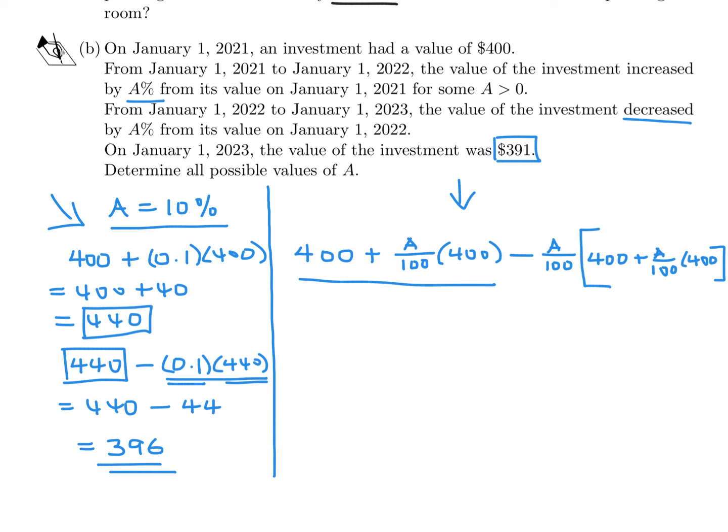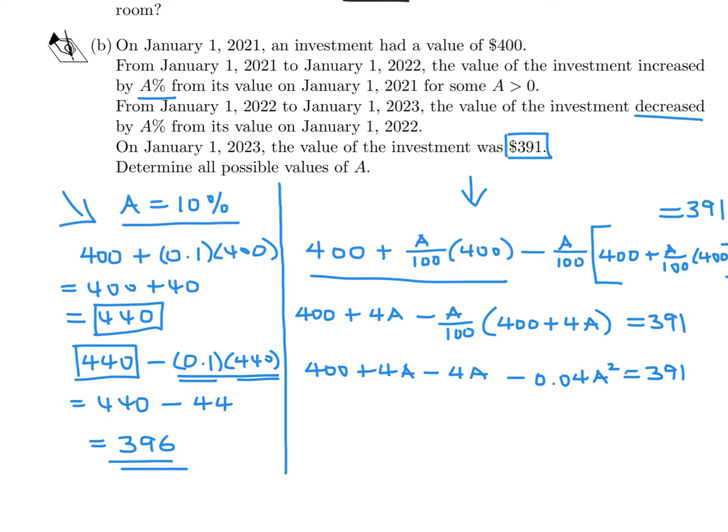Now let's do the math. We've got 400 and this looks like 4A. And then we have - A/100, and then this looks like 400 again + 4A. That equals 391. So this is 400 + 4A and then this will be -4A and this will be -0.04A². This is 391. And then these cancel. Bring the 391 over and that becomes 9. Then divide through by 0.04 and you'll get 225 = A². Finally take the square root to get A = 15. I believe that's the only possible value of A.